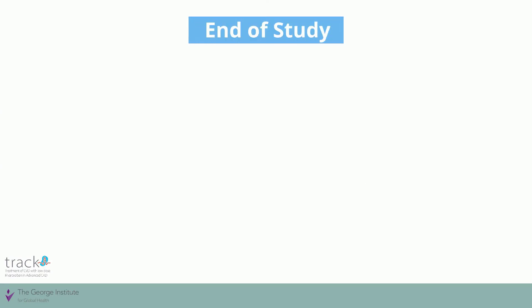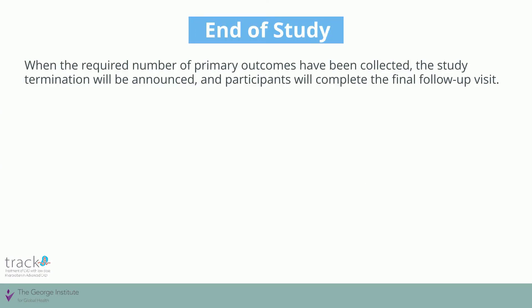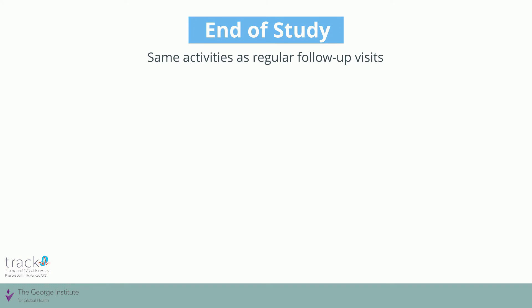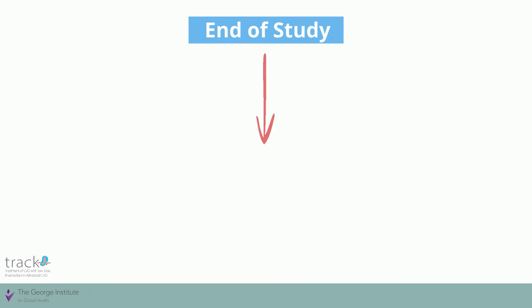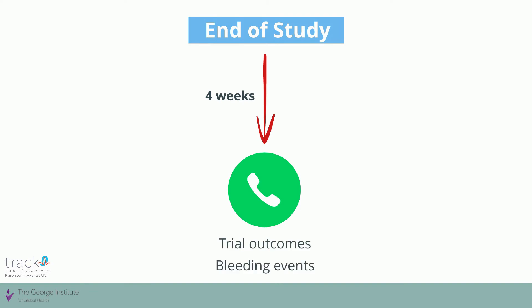The final visit is the end of study, which will take place once the required number of primary outcomes have been collected and the study is terminated. The same activities as regular follow-up visits should be undertaken except for the dispensing of study medication. Four weeks after the visit, a telephone follow-up will need to be conducted to record trial outcomes and bleeding events.